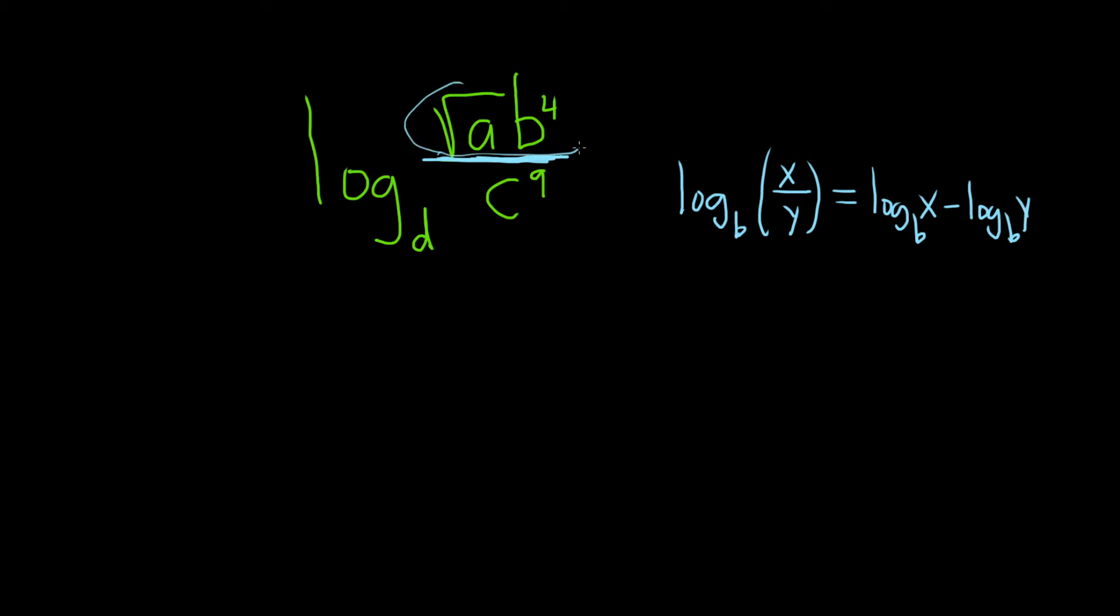The whole top piece here is your x, and this whole bottom piece is your y. So the first step is to write it that way. This is the log base d of the square root of a, b to the 4th, minus the log base d of c to the 9th.